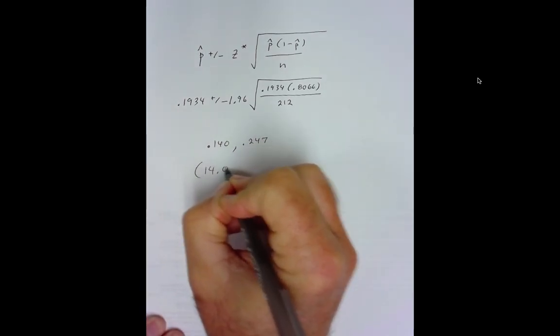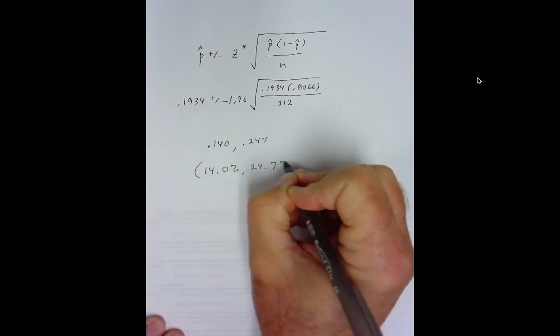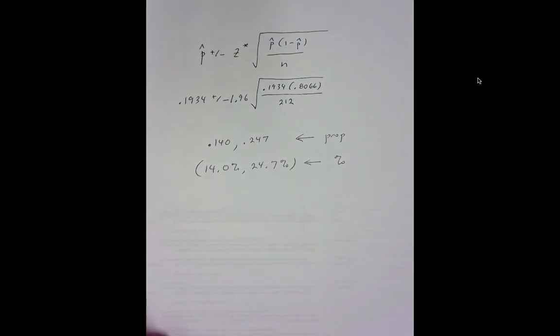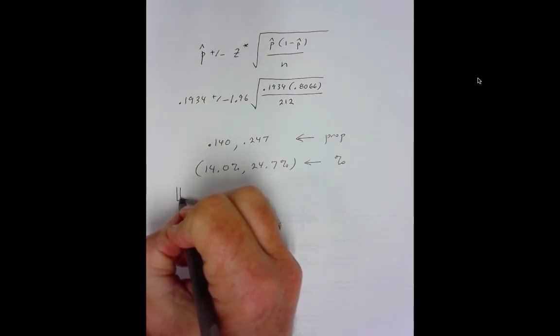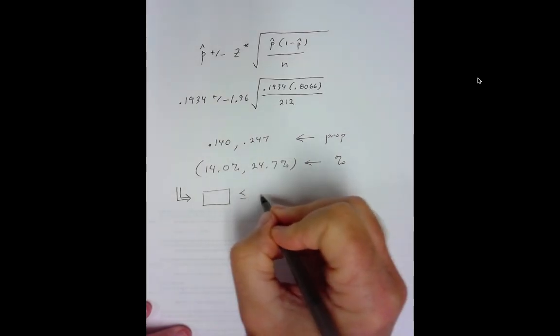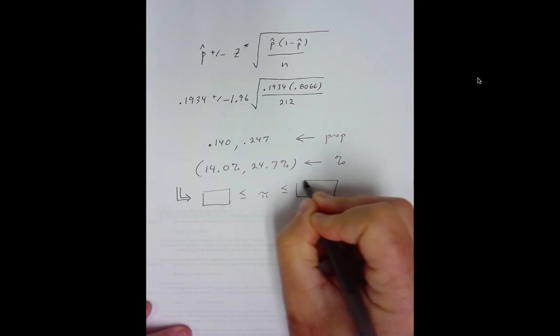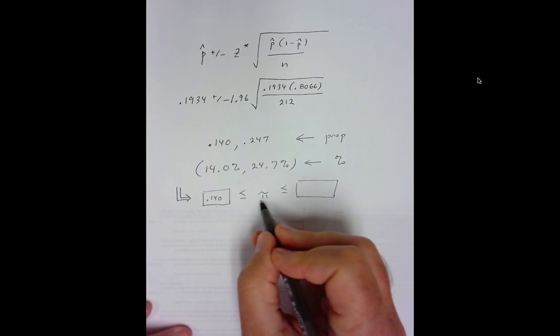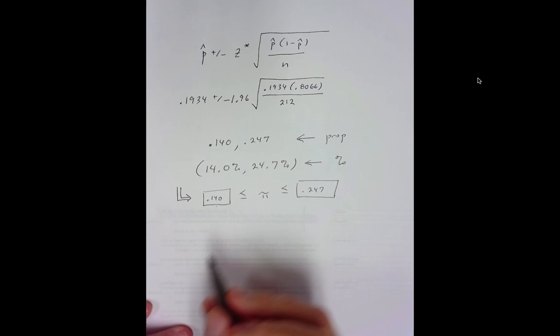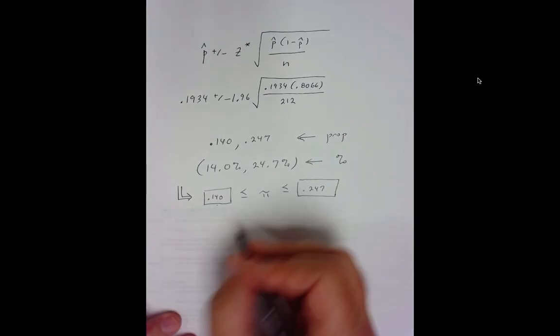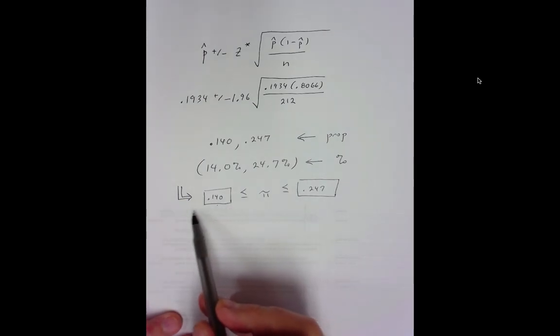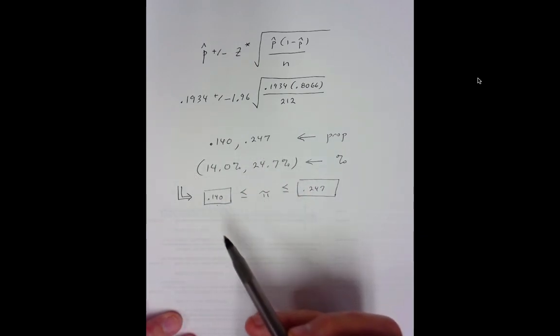Our confidence interval is 14.0% to 24.7%. If we want to express it as a proportion, we express it as a proportion. If we want to express our confidence interval as percentage, we can do so. Sometimes your textbook will want you to put it in this form, and that's perfectly fine. We can say that there's a 95% chance or a 0.95 probability that the percentage of all sea fans that are infected falls between these two values, or there's a 0.95 probability that this interval contains the percentage of all sea fans that are infected by this particular disease.